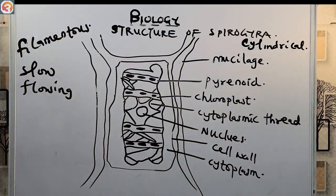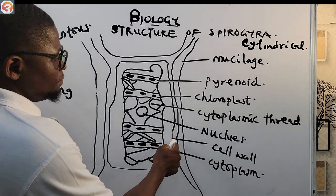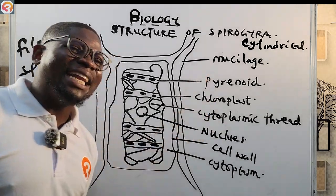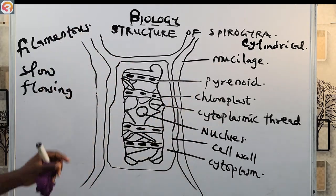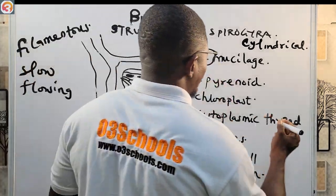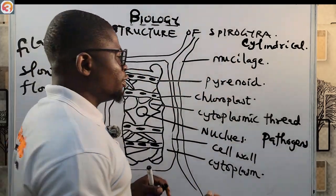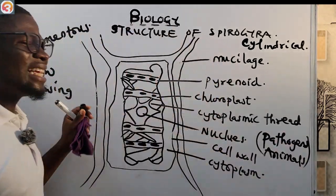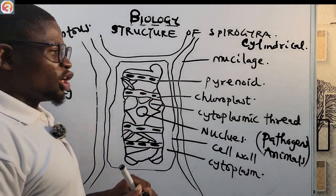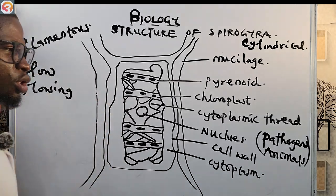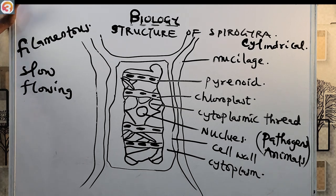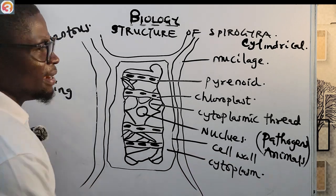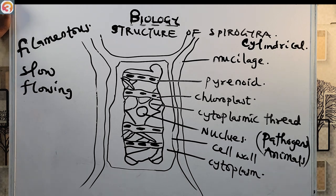The mucilage helps to protect Spirogyra from pathogens and from animals. It also serves as a lubricant and helps to hold the filamentous structure together. So the cell wall is surrounded by mucilage, which protects it from pathogens and animals, acts as a lubricant, and holds the filaments together.